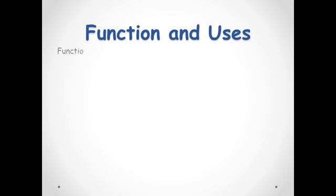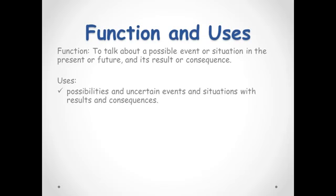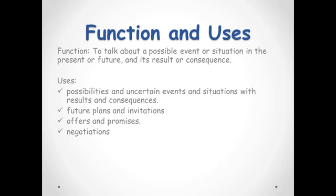The function of the first conditional is to talk about a possible event or situation in the present or future with results and consequences. Some common situations where the first conditional is used includes possibilities, possibilities and uncertain events and situations with results and consequences, future plans and invitations, offers and promises, negotiations, threats and warnings, polite requests, and more. These are some of the common situations. There are many more situations where the first conditional is used.